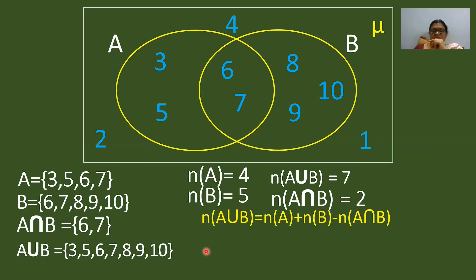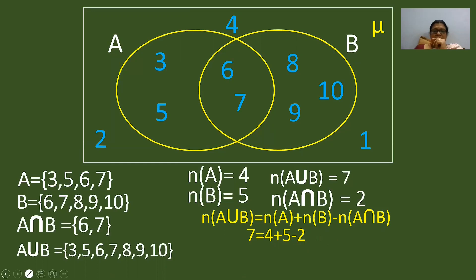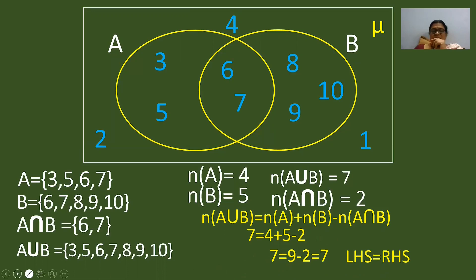Now we have to prove LHS equals RHS. We substitute: N of A union B equals 7, N of A is 4, N of B is 5, and N of A intersection B is 2. So 4 plus 5 equals 9, minus 2 gives 7. LHS equals RHS — proved. This is a very important problem worth 4 marks. They may also use alphabets instead of numbers.